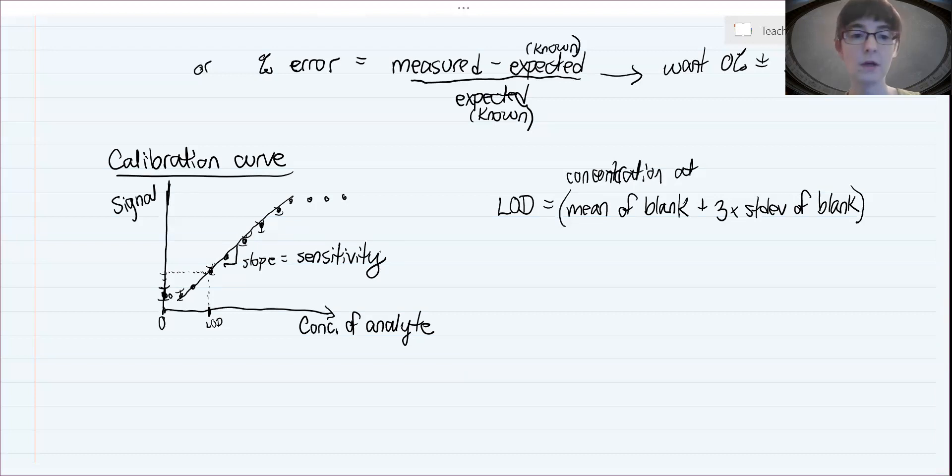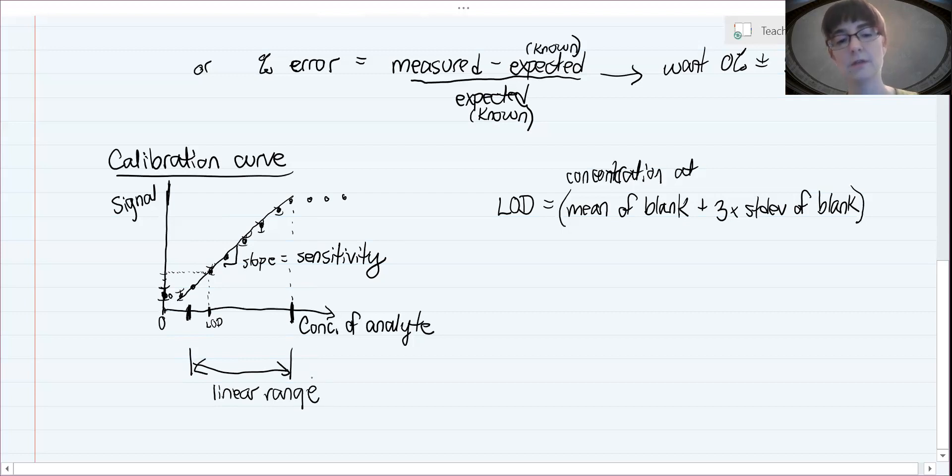The last figure of merit that you can look at here is what is the linear range. That is the range over which the assay is linear. So here I've kind of drawn this line where it's linear, and if we come down and we look at what's the concentration range over which it's linear, that range of concentrations is the linear range. That's a range of concentrations over which you get a linear signal relationship to the concentration of analyte.